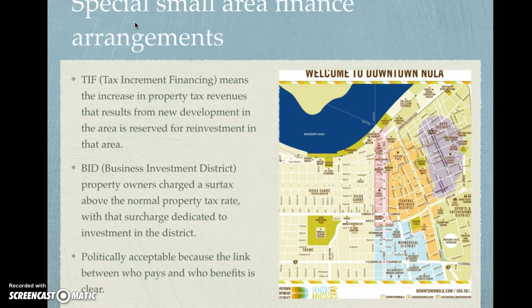This map of New Orleans shows how the downtown development district designates different districts for investment — a sport and entertainment district, a biomedical district, the central business district, an arts district. This shows that a city like New Orleans has this economic driver, a downtown development district, where they designate areas and say we're going to reinvest money here in the name of economic development.